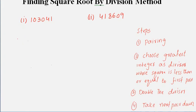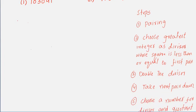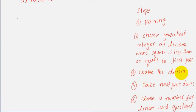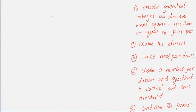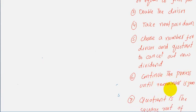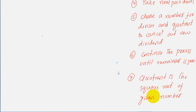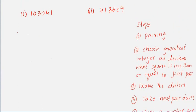First, we discuss the steps for finding the square root of a number by the division method. Step one: pair the digits. Step two: choose the greatest integer as divisor whose square is less than or equal to the first pair. Step three: double the divisor. Step four: take the next pair down. Step five: choose a number for divisor and quotient to cancel out the new dividend. Step six: continue the process until the remainder is zero — the quotient then becomes the square root.